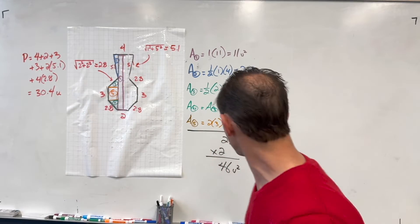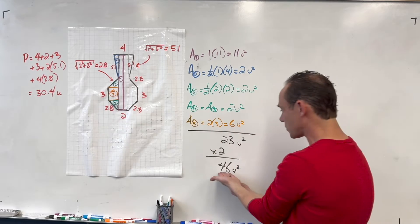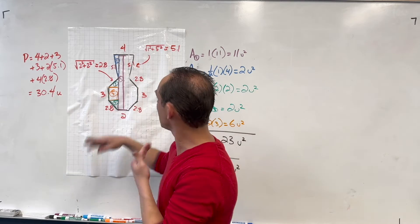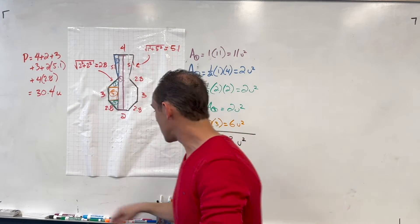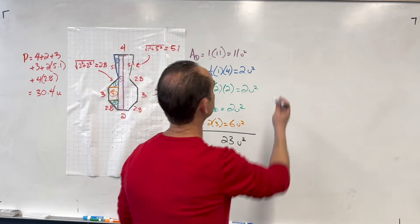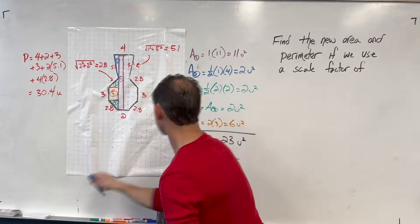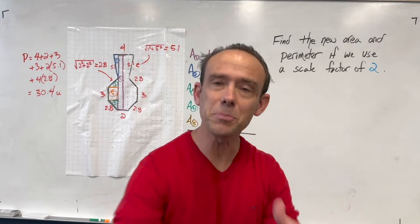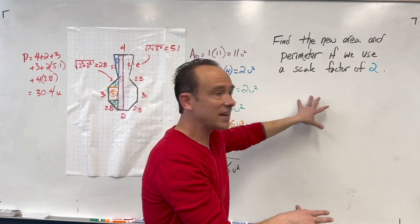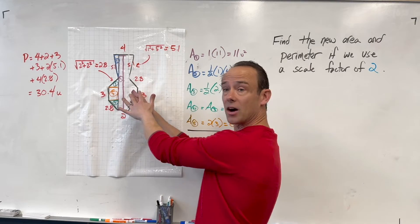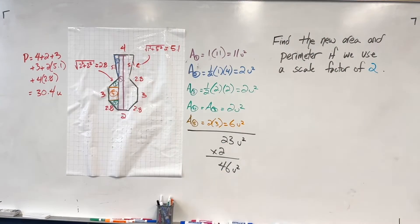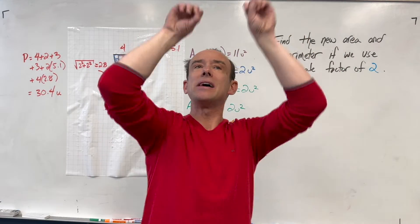After all that work, the area of this beautiful vase is 46 units squared and the perimeter is 30.4. I had to use the Pythagorean theorem a couple times. Now the next question: find the new area and perimeter if we apply a scale factor of 2 to that vase.